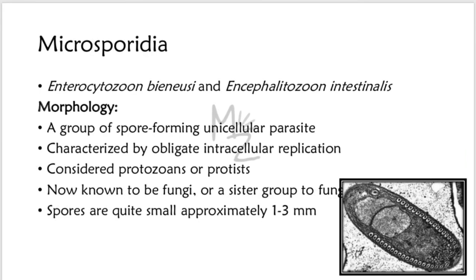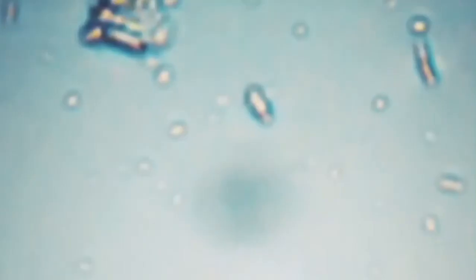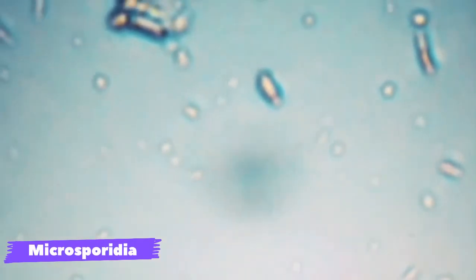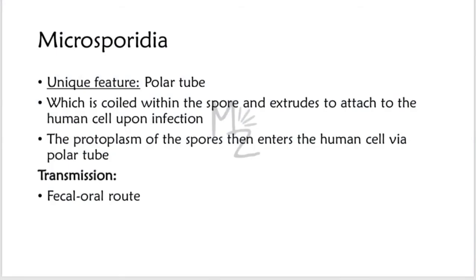Microsporidia — including Enterocytozoon bieneusi and Encephalitozoon intestinalis. Morphology: A group of spore-forming unicellular parasites characterized by obligate intracellular replication. Once considered protozoans or protists, they are now known to be fungi or a sister group to fungi. Spores are quite small, approximately one to three micrometers. Microsporidia have a unique feature called the polar tube, which is coiled within the spore and extrudes to attach to the human cell upon infection. The protoplasm of the spore then enters the human cell via the polar tube.